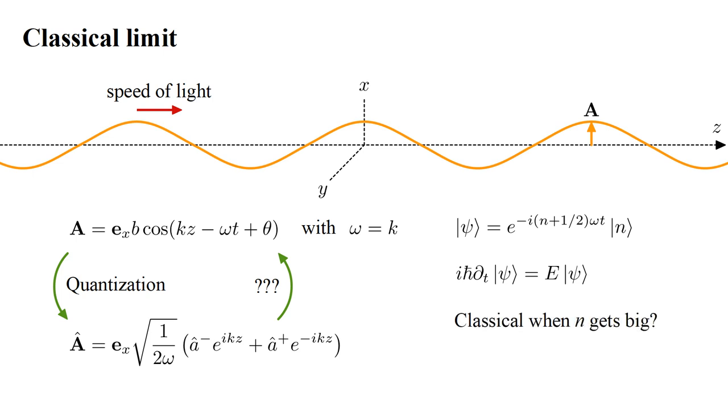It seems reasonable that when we have many photons, that is, when n gets big, this quantum state might behave somewhat like a classical electromagnetic wave. We want to calculate the expected value of the electromagnetic field for this wave function. To do that, we need both the ket and the bra forms of the wave function. The bra form is just the complex conjugate of the ket form, with time dependence e to the plus i, n plus one-half, ωt.